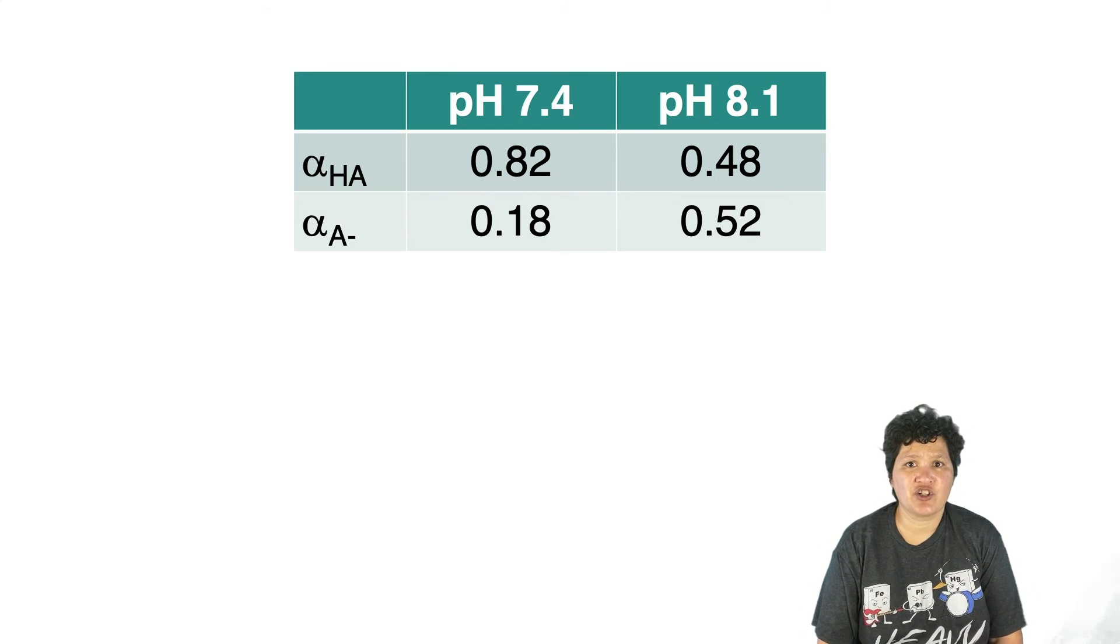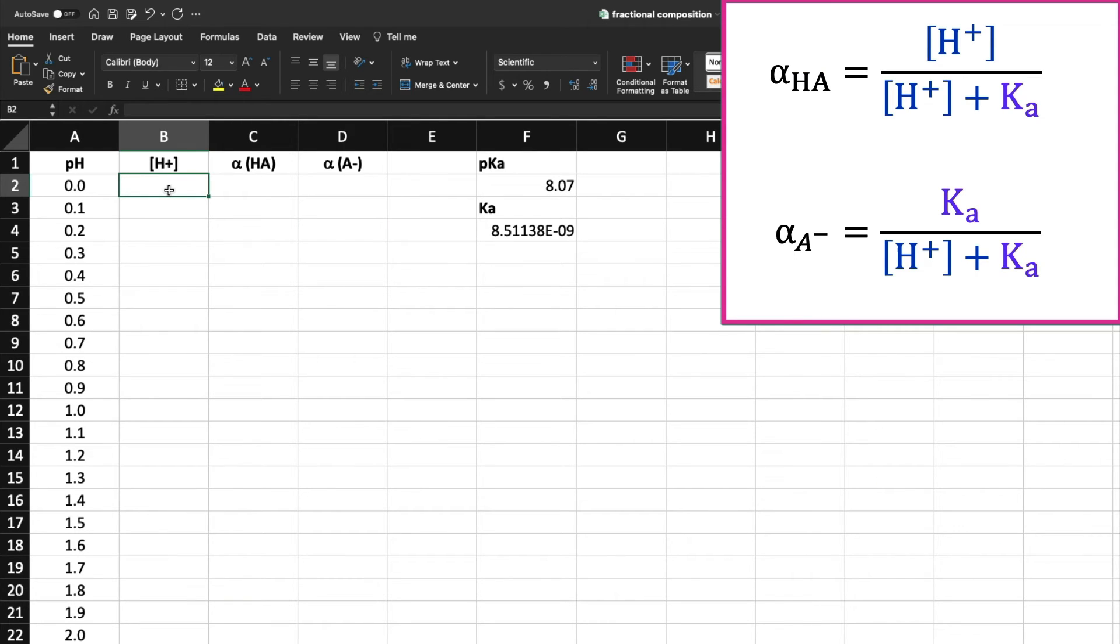But now I want to do what I promised earlier and show you a graph. I'm going to use Excel to make this. As you can see, I've got the value for Ka here in cell F4, and I've put a range of pHs from 0 to 14 in column A. I'm going to use those pHs to calculate the H+ concentration in column B, and the formula for HA into column C. And the formula for A- into column D. And then I'm going to cut and paste these all the way down.